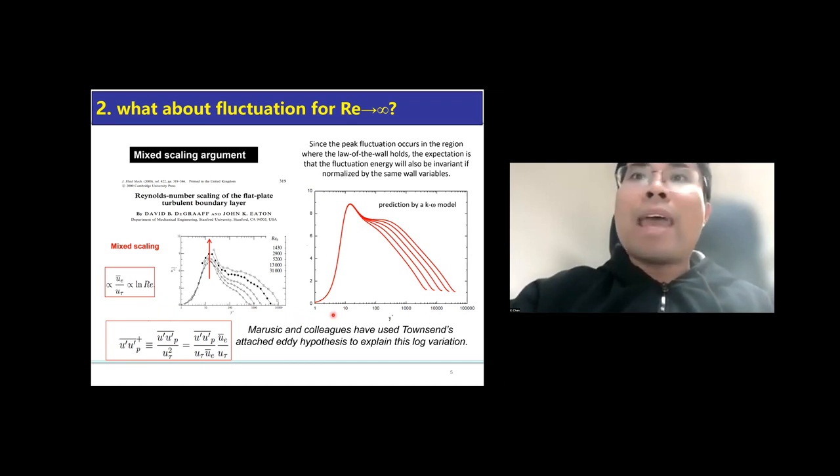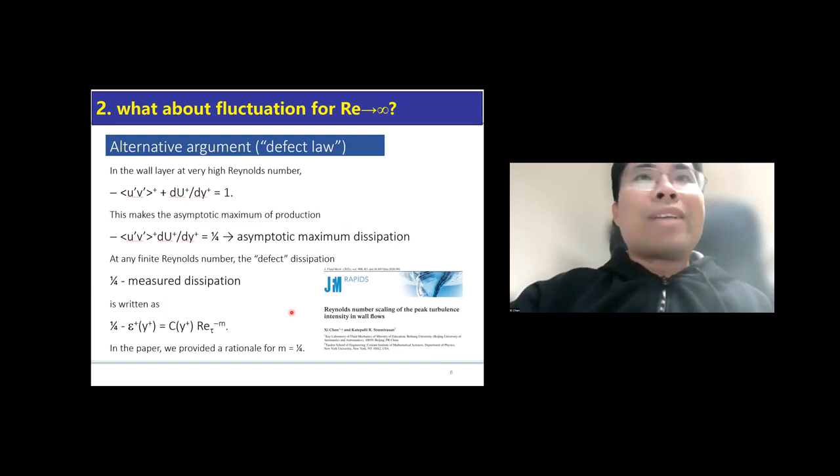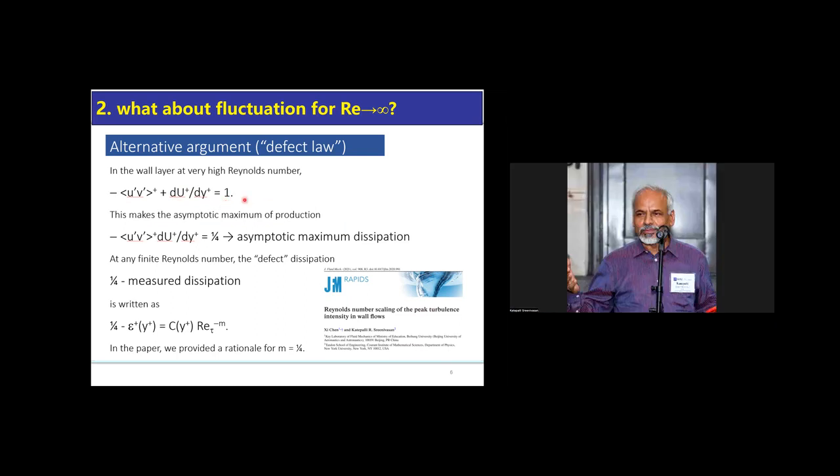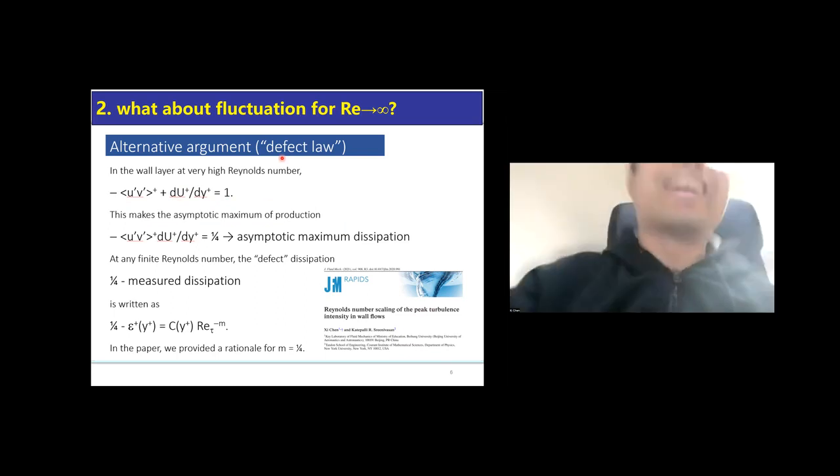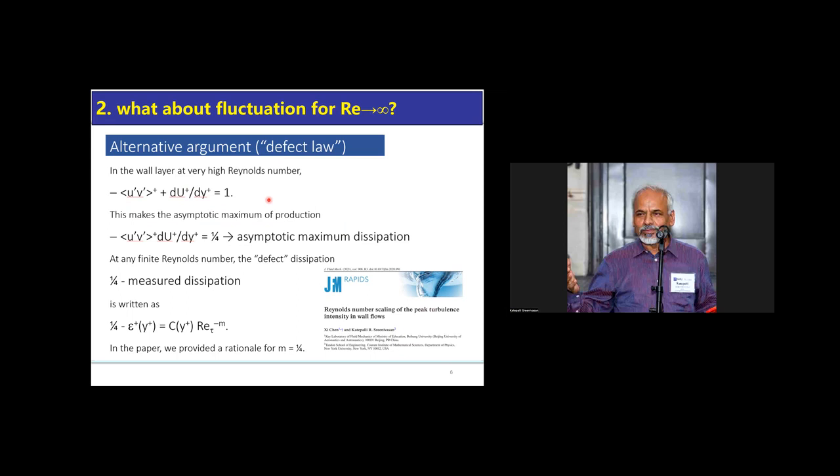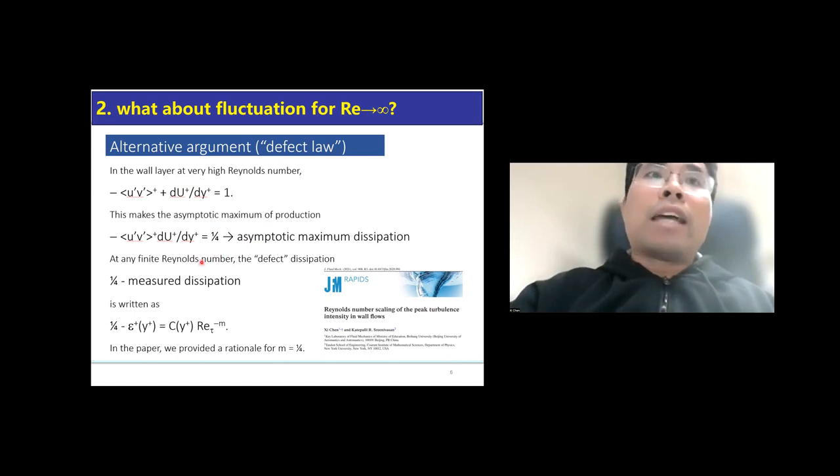Recently, Marusic and his colleagues have used Townsend's attached eddy hypothesis to explain this logarithmic scaling, and this does call into question the law of the wall. Recently, Zhidavasson and I, we have a different view regarding the finite Reynolds number dependence of the intensity peak. We note that in the wall layer at a very high Reynolds numbers, the Reynolds shear stress and the mean shear, they have an exact balance. The sum of them together equals to one after normalization by the wall variables. This makes the asymptotic maximum of production, which is one-fourth. And at any finite Reynolds number, the defect dissipation, which means that the measured dissipation away from the asymptotic bound one-fourth, is a quantity that describes how far away the current flow state is from the asymptotic state.